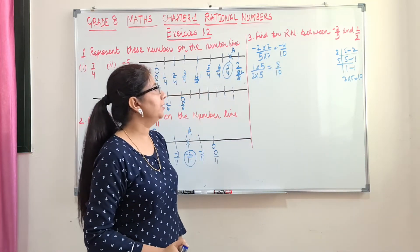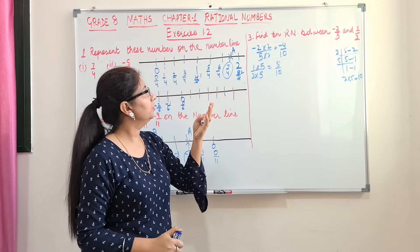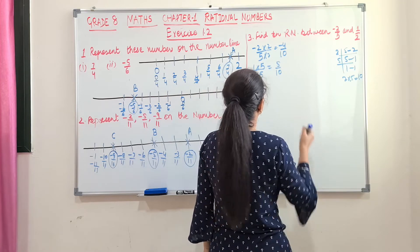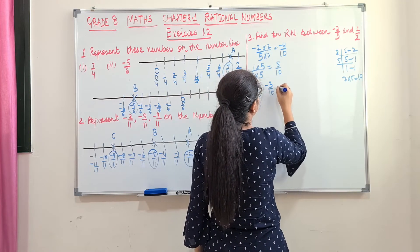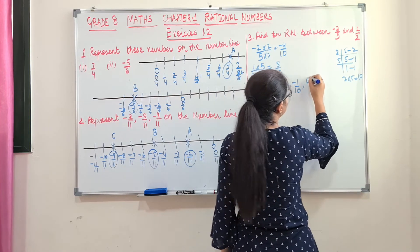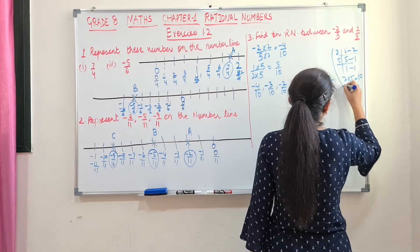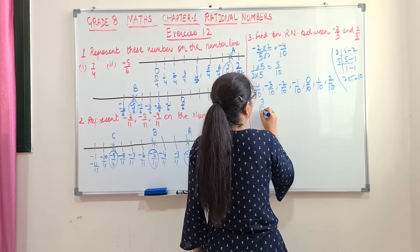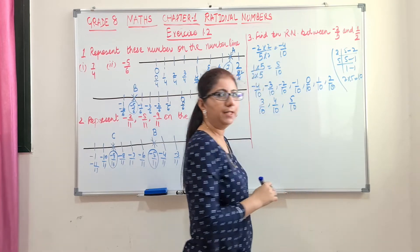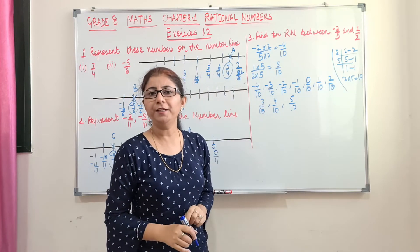Now let's see how many numbers will come in between them. Minus 4, minus 3, minus 2, minus 1, 0, 1. Let's write here. This is minus 4 by 10. Minus 3, minus 2, minus 1. Then it is 0, 1, 2, 3, 4 and 5. Let's check whether 10 numbers are there or not. This is 1, 2, 3, 4, 5, 6, 7, 8. Only 8 numbers.